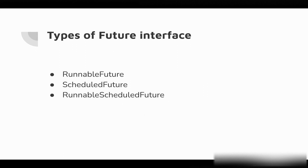There are three types of future interface we'll be discussing in this video: RunnableFuture, ScheduledFuture, and RunnableScheduledFuture. We'll go through each of them with code examples, so let's jump to the IDE to go through all those examples and see what future objects Java offers.